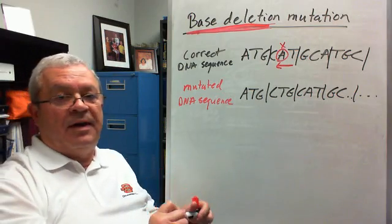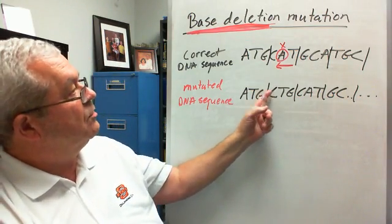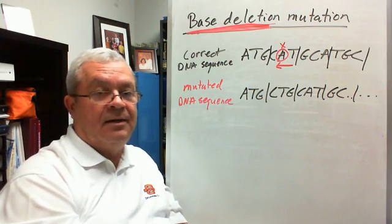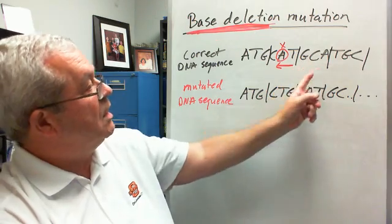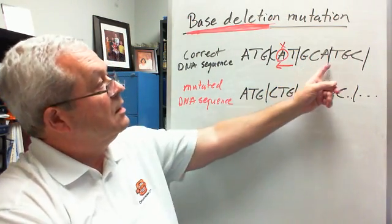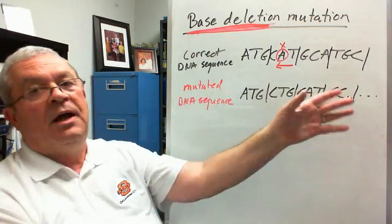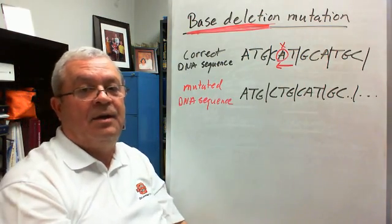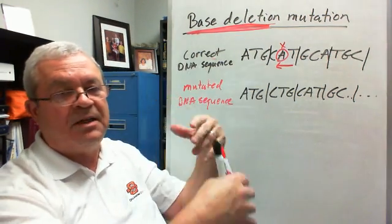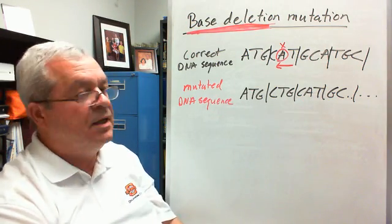How is this going to affect the resulting protein? What are the chances of CAT and CTG coding for the same amino acid? Not very good. GCA and CAT — same amino acid or different? Different. TGC and GC something — different amino acid. And is the stop codon going to be in the right place? No, the stop codon got moved out of position and messed up — it's no longer where it was. There may even be a false stop codon in there someplace.